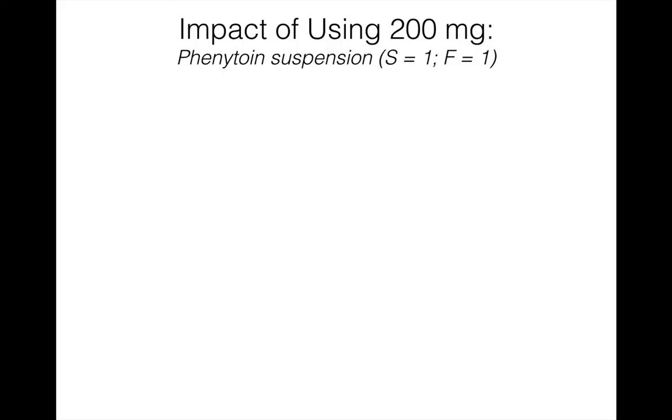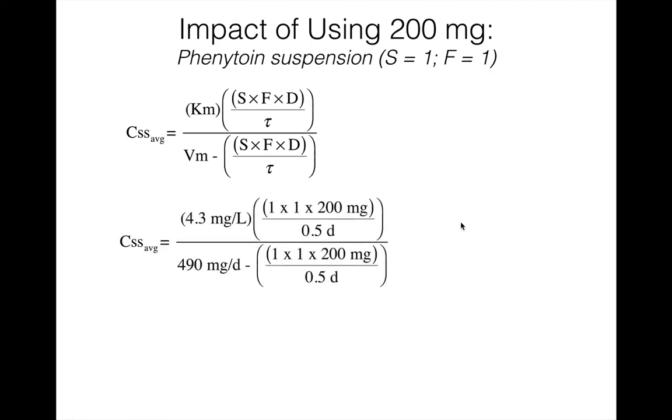Here is the impact of using 200 milligrams of phenytoin suspension, with S equals 1. The formula we want to use is this one, which calculates the CSS average. When we plug in our units—Km 4.3 milligrams per liter and Vm of 490 milligrams per day, and using 0.5 days as the interval—the CSS average is predicted to be 19.1 milligrams per liter. Look at that: the difference between using 190.4 milligrams and 200 milligrams every 12 hours results in almost a 30% increase in the concentration predicted. For about a 5% increase in dose, we got a 27% increase in concentration.